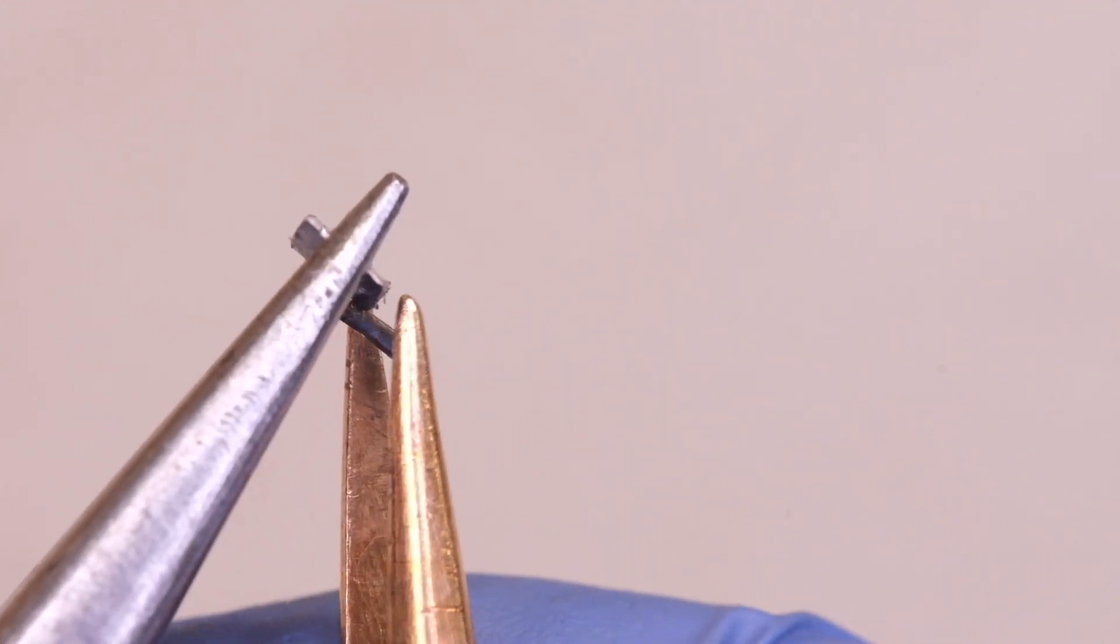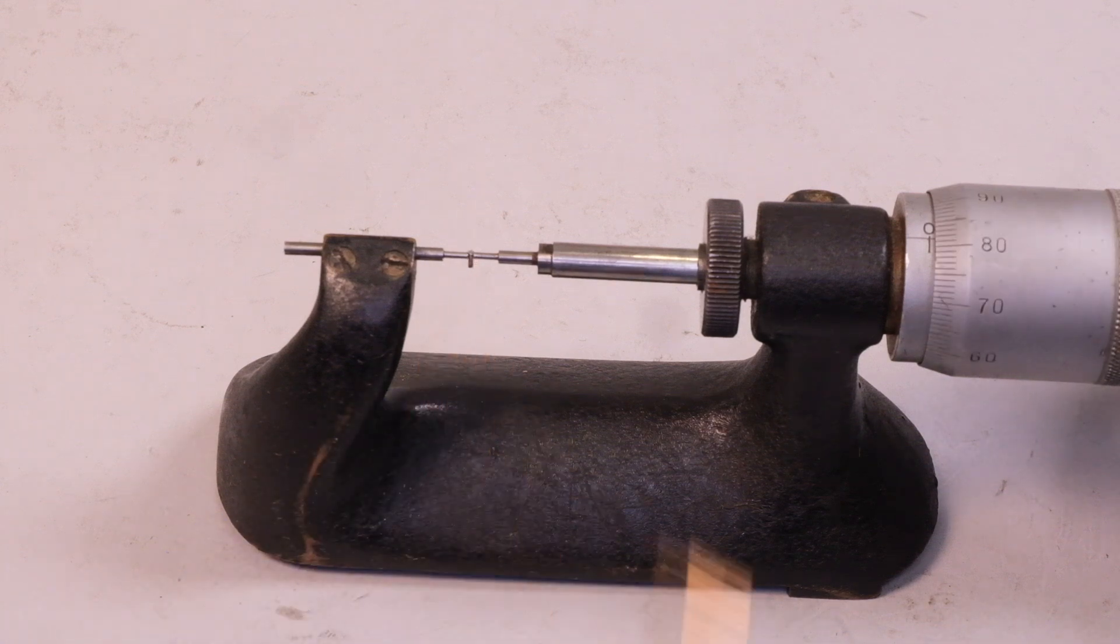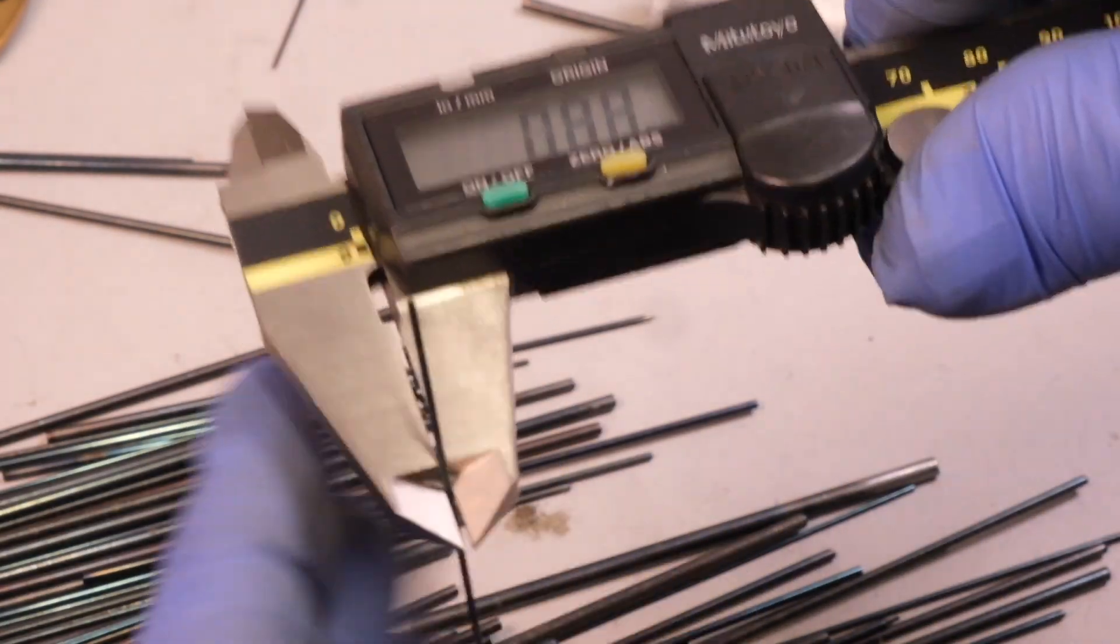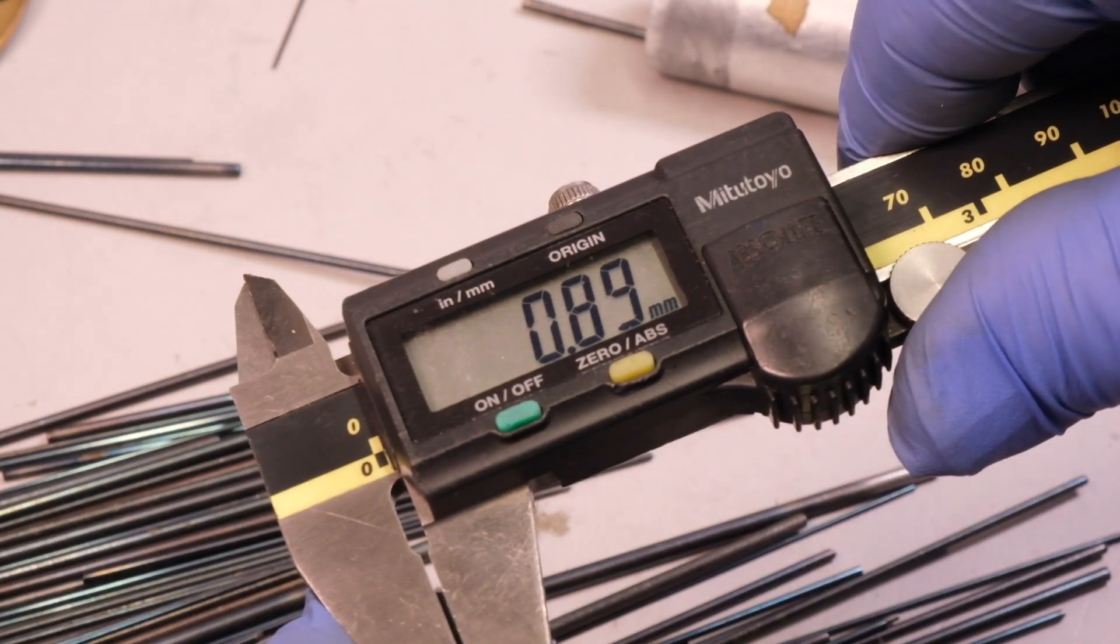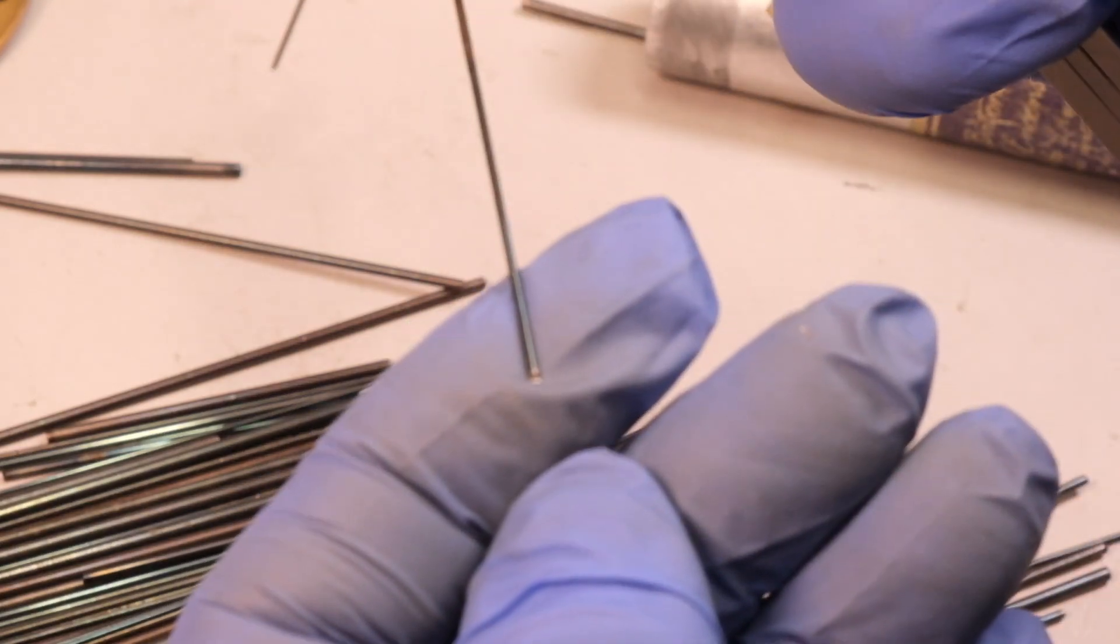I was then able to measure that, and you can see here it's just over 0.8 of a millimetre in diameter. And so I then selected a bit of blued pivot steel that was slightly larger diameter than that, which is going to be our new soldered on extension.